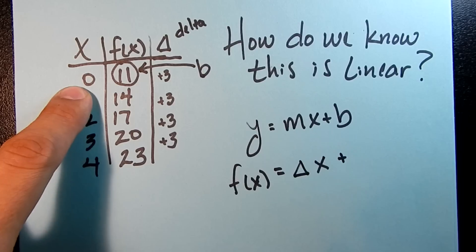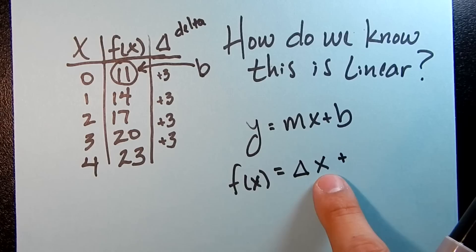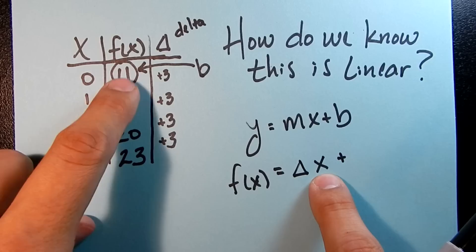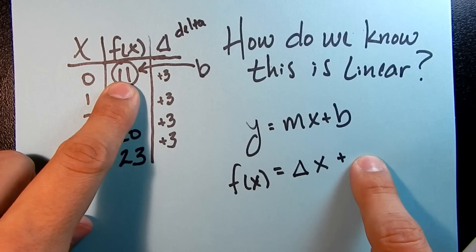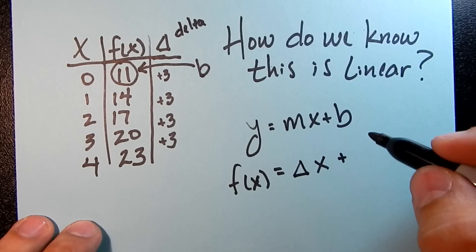Why does that work? Well, what this is doing is if your input here is 0, so if you put 0 in for x, what has to be left over has to be this. It's going to be 11 in this case.